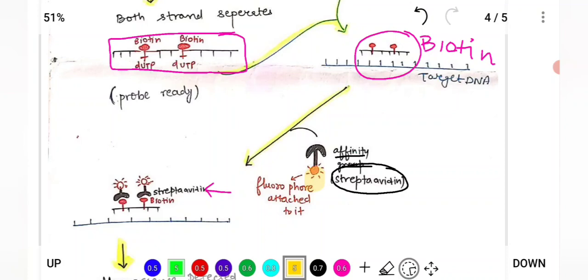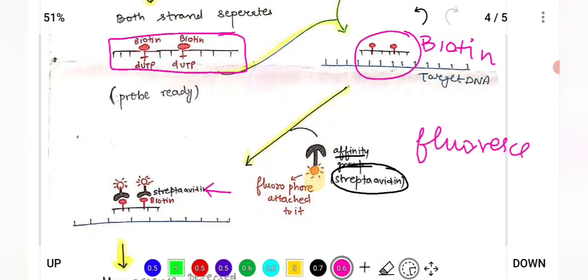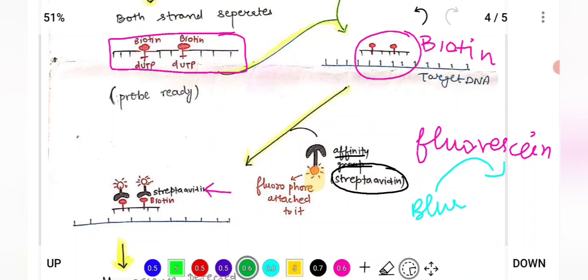Along with streptavidin, we attach a fluorophore. A fluorophore is a molecule that, when excited by a particular light, emits light of a particular wavelength. For example, fluorescein, when excited with blue light, emits green fluorescence.